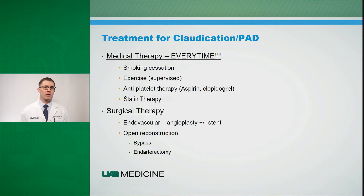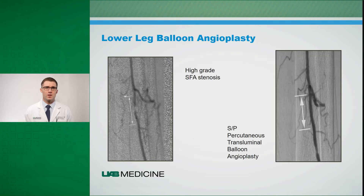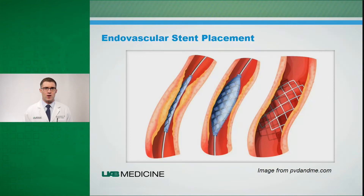Surgical therapy with endovascular measures or minimally invasive approaches with wires and catheters can be used, or open reconstruction with bypass surgery may be needed. Endovascular therapies often involve getting access in the groin or the arm into an artery, advancing a wire across a stenosis in the vessel, and ultimately balloons and stents can be used to open the vessel and improve blood flow to the limb.